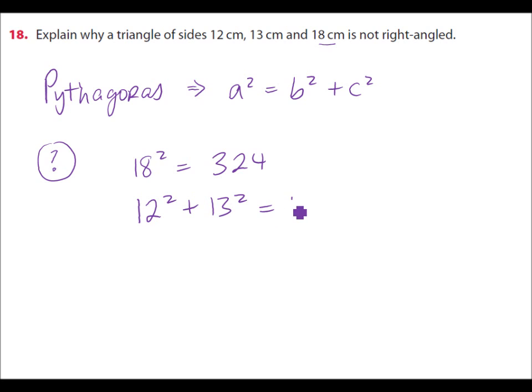Let's consider 12 squared plus 13 squared. Well, 12 squared is 144. 13 squared is 169. And when we add these, we only get 313. So they're not equal.